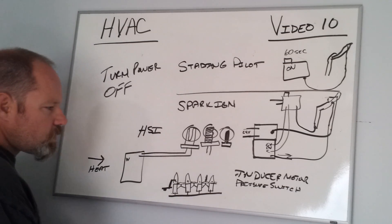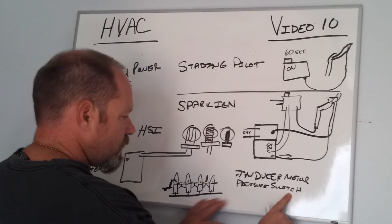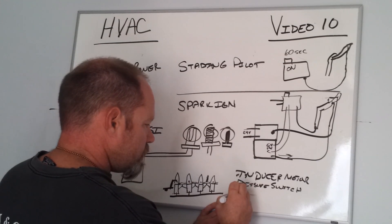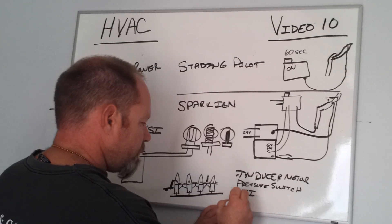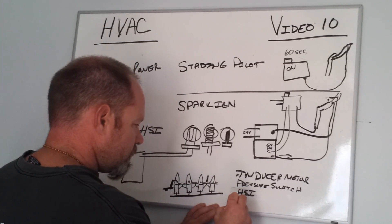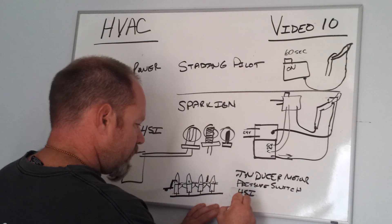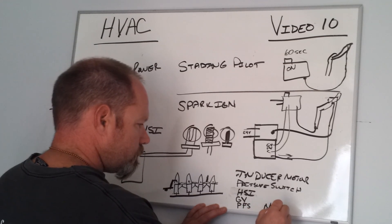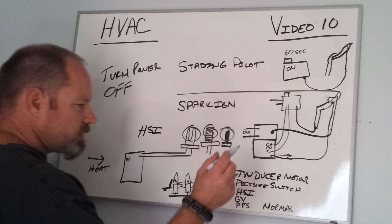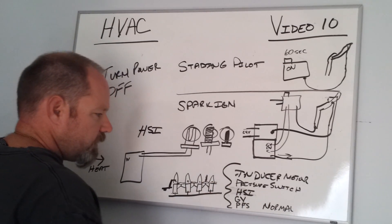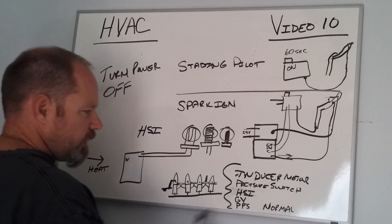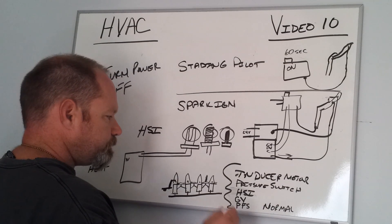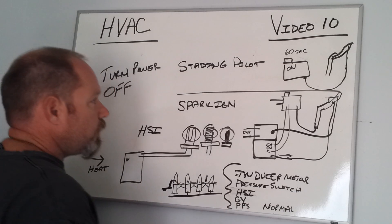So to summarize the sequence: pressure switch kicks in, HSI igniter glows, gas valve opens, pilot or flame sensor confirms flame, then normal operation. If you know the sequence of operation, that helps you determine what the problem is. If any one of these steps doesn't happen, you know that's where the problem is and the rest of it is fine.